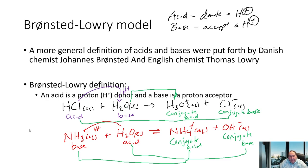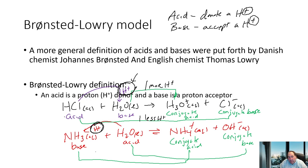Conjugate acid-base pairs must differ by exactly one H+. In HCl to Cl-: one fewer H+ on the right. In H2O to H3O+: one more H+. In NH3 to NH4+: one more H+. In H2O to OH-: one fewer H+. The only allowable difference between conjugate pairs is one H+; nothing more.